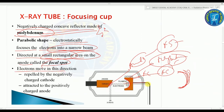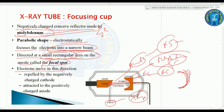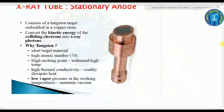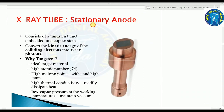The electrons move from cathode to anode — repelled by the negatively charged cathode and attracted to the positively charged anode. When they strike the target on the anode, they are converted into X-rays.